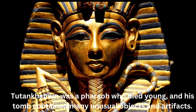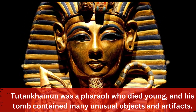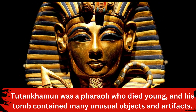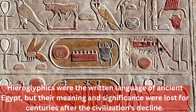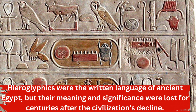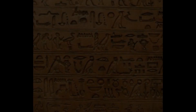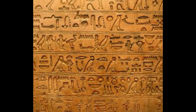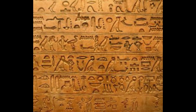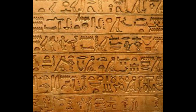Tutankhamun was a pharaoh who died young, and his tomb contained many unusual objects and artifacts. Some researchers believe he may have been murdered, while others think he died from illness or a tragic accident. Hieroglyphics were the written language of ancient Egypt, but their meaning and significance were lost for centuries after the civilization's decline. It was not until the discovery of the Rosetta Stone in the 19th century that scholars were able to decipher the hieroglyphics and unlock the secrets of ancient Egyptian writing.